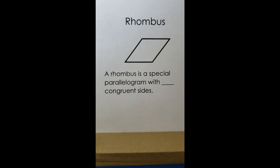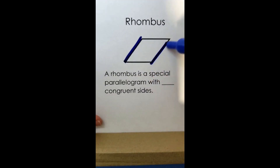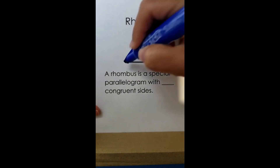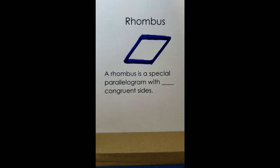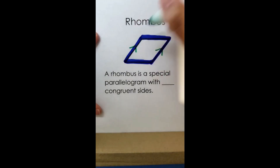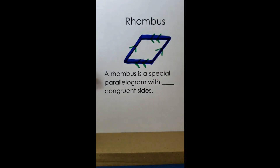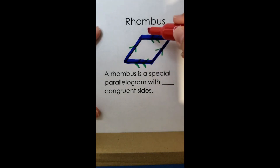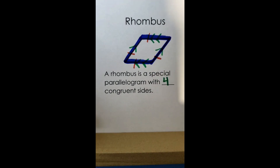The rhombus is a special parallelogram — not just a quadrilateral — because rhombus, rectangle, and square all fall under the parallelogram category. Like a parallelogram, opposite sides are congruent and parallel. What makes a rhombus special is that it has four congruent sides — all sides are equal.